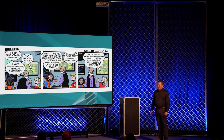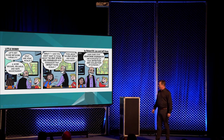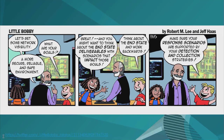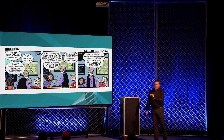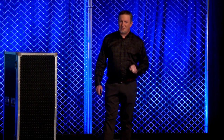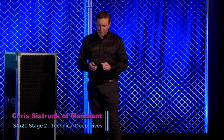About a month ago, Rob Lee posted about network visibility — a more secure, reliable, and safe environment. Think about the end-state deliverables that impact your goals, and work backwards. Make sure your response scenarios are supported by detection and collection strategies. You have to have an end goal — the engineering part — and engineer the detection and response strategies.